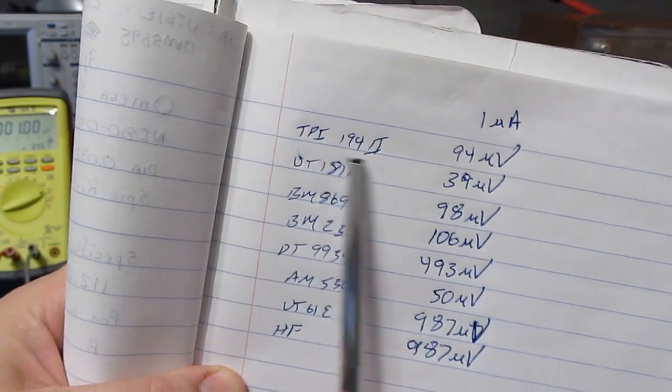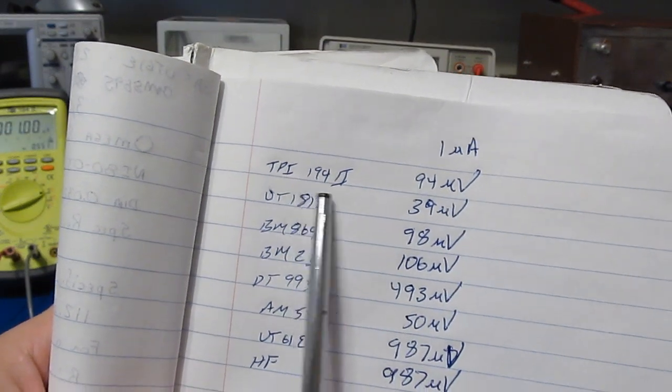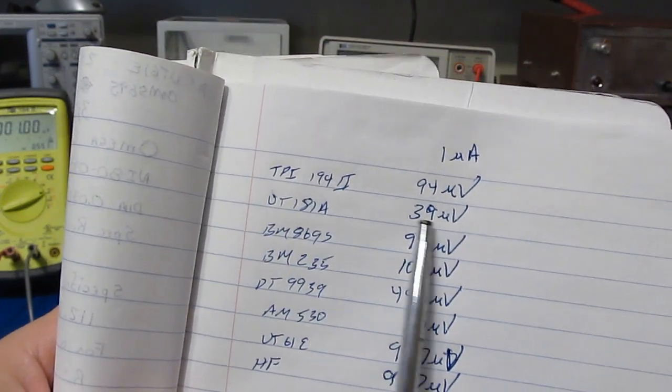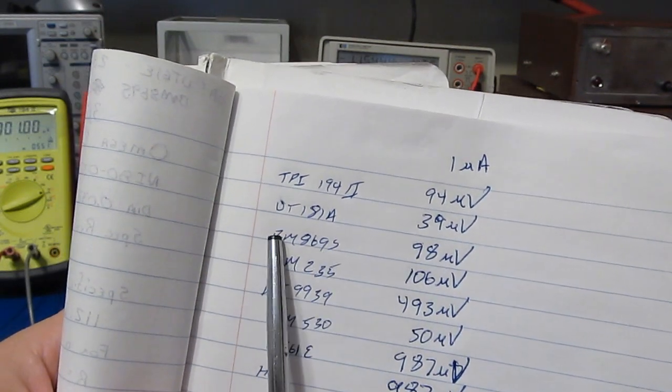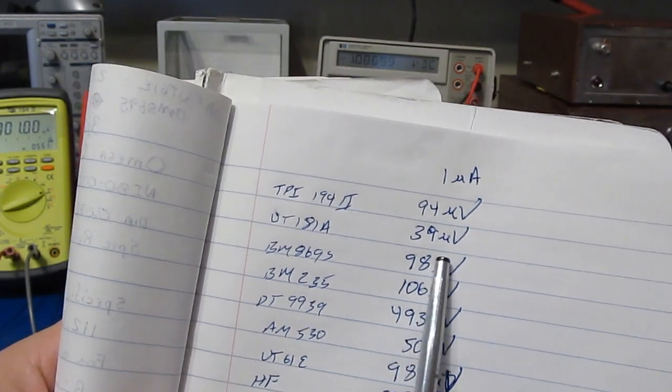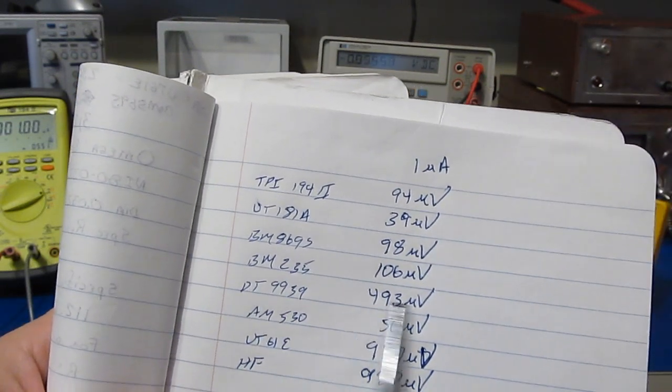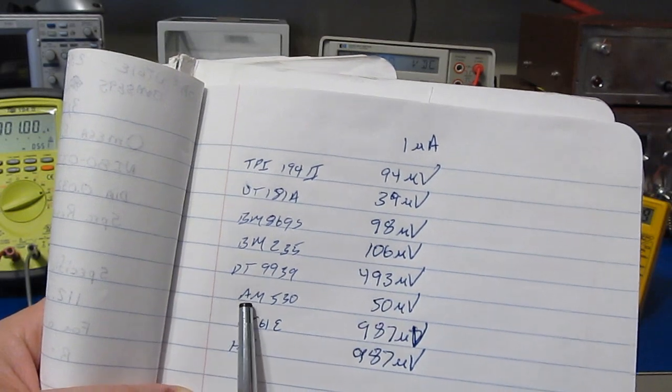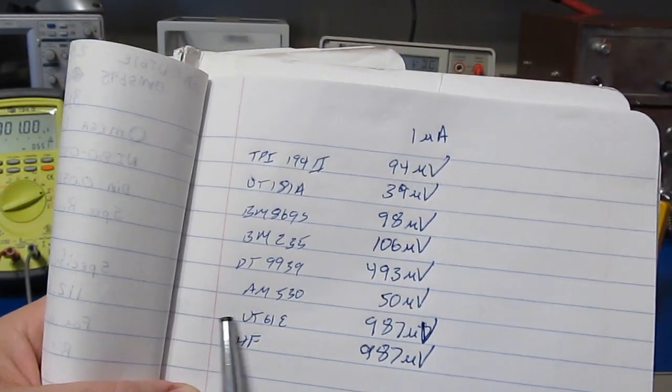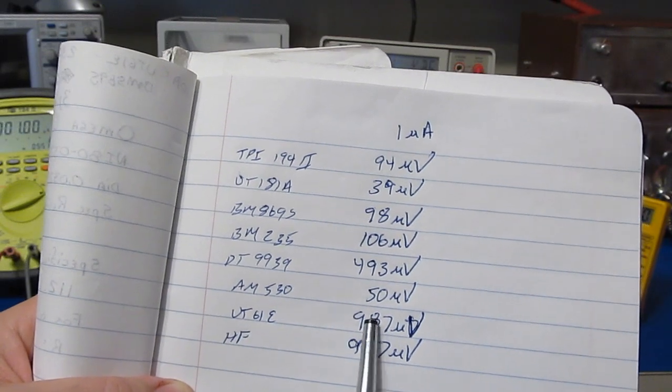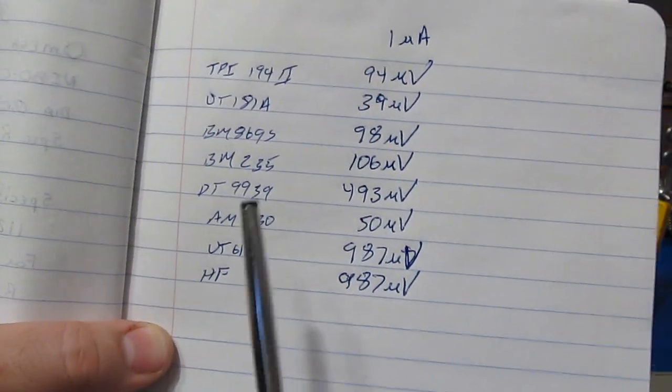All right, so from left to right you can see 94 microvolts for the TPI, the Unity 181 is about 40 microvolts, the BM 869S about 98, 106 for the BM 235, the SEM meter about 493, the AM 530 about 50, and then the UT61E is about 987 and 987 as well for the Harbor Freight meter.